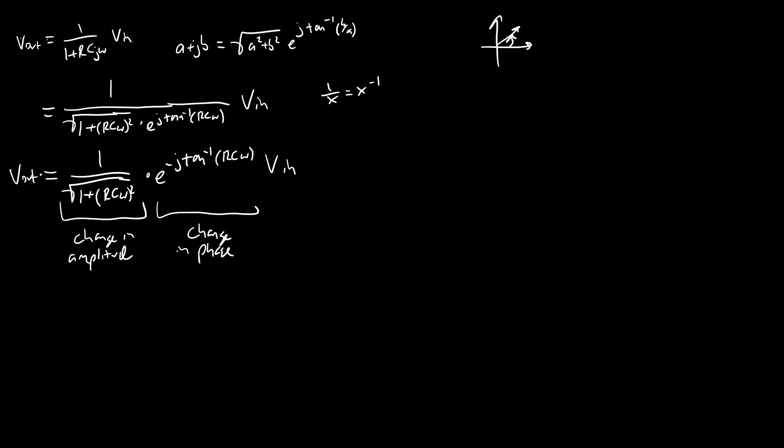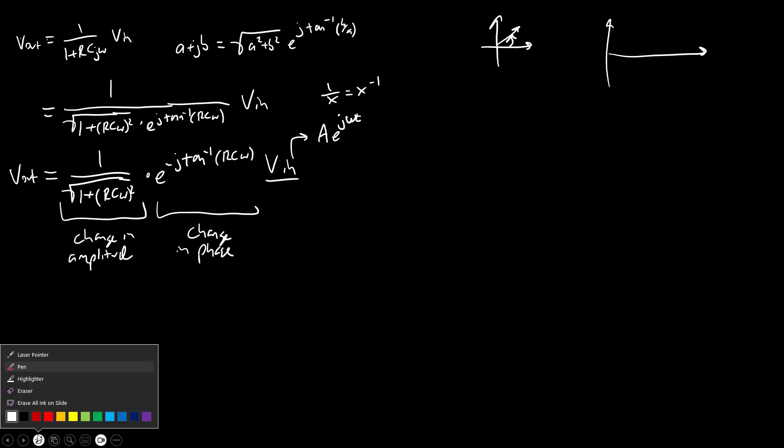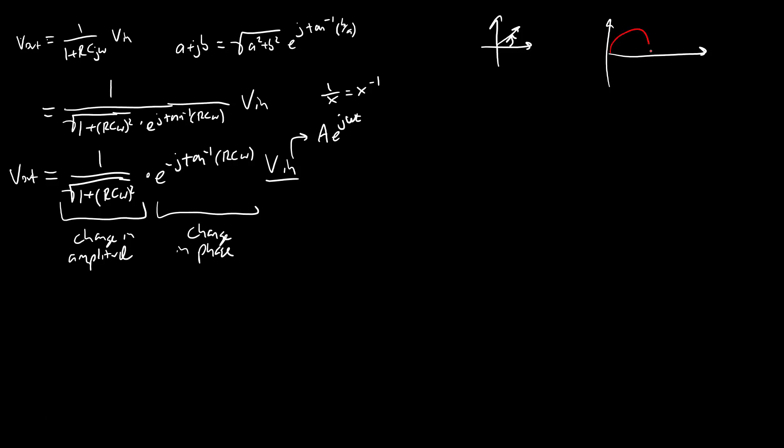So we now have Vout as a function of Vin and remember that using this complex notation, Vin, we would write as A e to the j omega t where A is the amplitude and omega is the frequency. So we can also kind of use this to explain the phase delay that we talked about in the time domain a little more using different colors.